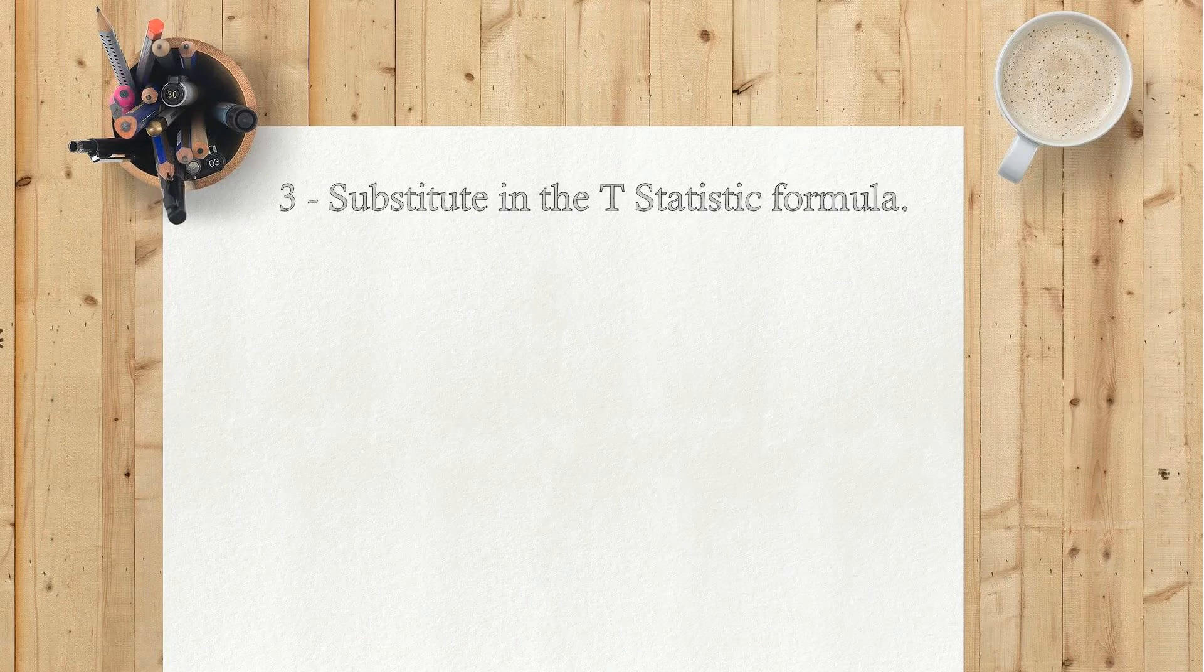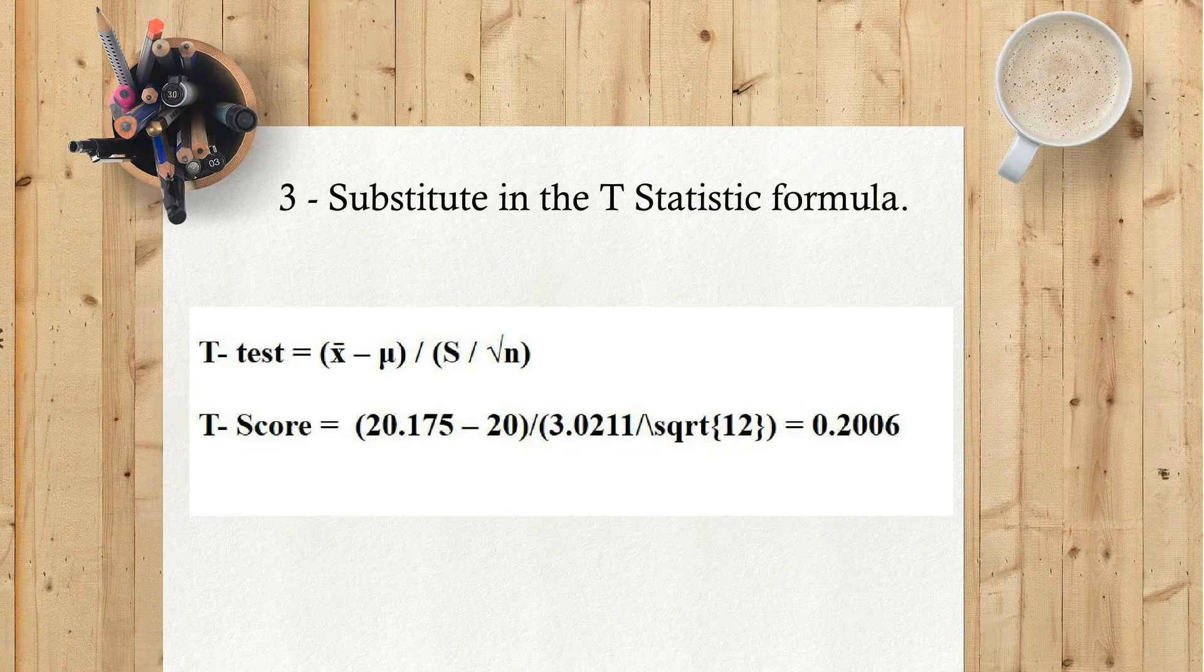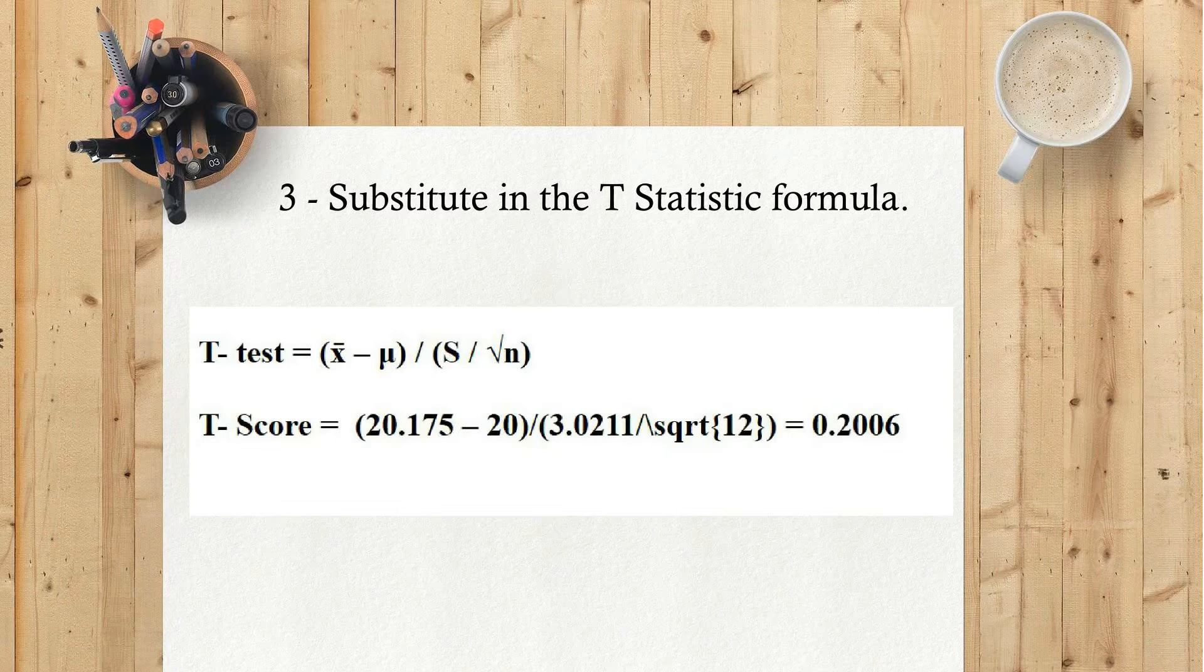3) Substitute in the t-statistic formula. t-test equals x̄ minus μ divided by s divided by square root of n. t-statistic formula t-test equals 20.175 minus 20 divided by 3.0211 divided by square root of 12 equals 0.2006.